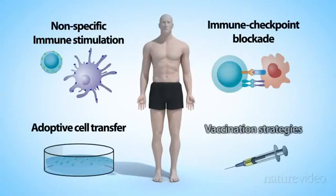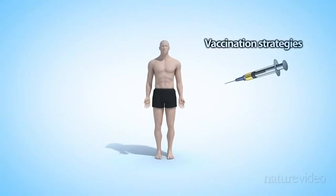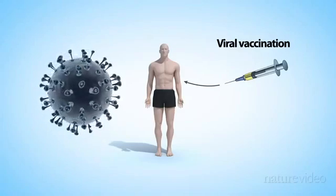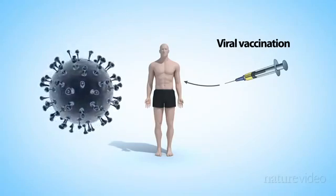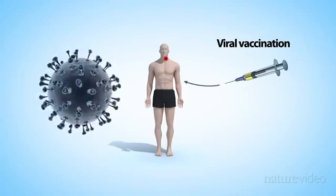The fourth strategy uses vaccinations. Unlike the BCG vaccine that we mentioned earlier, and which targets the immune system in a general way, these vaccines are used to direct immune cells very specifically to the cancer tissue. Several viral vaccines have shown promising results in clinical trials. For example, a weakened version of the herpes simplex virus, modified to produce an immune-stimulating factor, is being developed for melanoma and head and neck cancer.